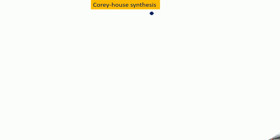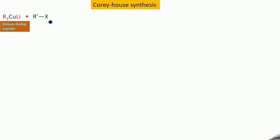Next we will go to Corey-House synthesis. Here you have to take R₂CuLi, which is called lithium dialkyl cuprate. On treatment with alkyl halide R'X, you will be getting R and R'. This R combines with R' to give R-R', which we call an alkane.